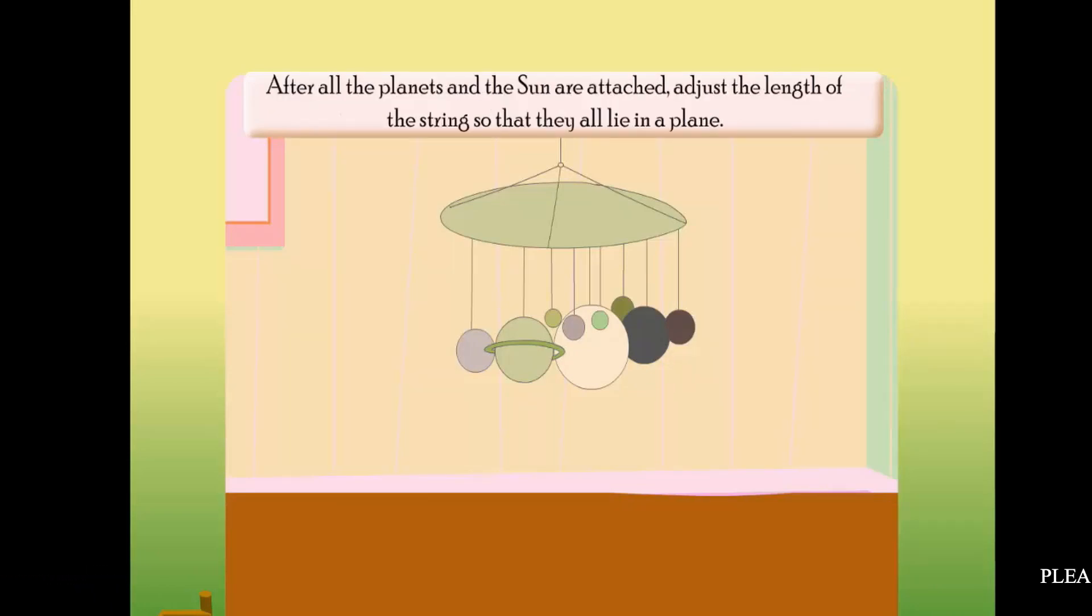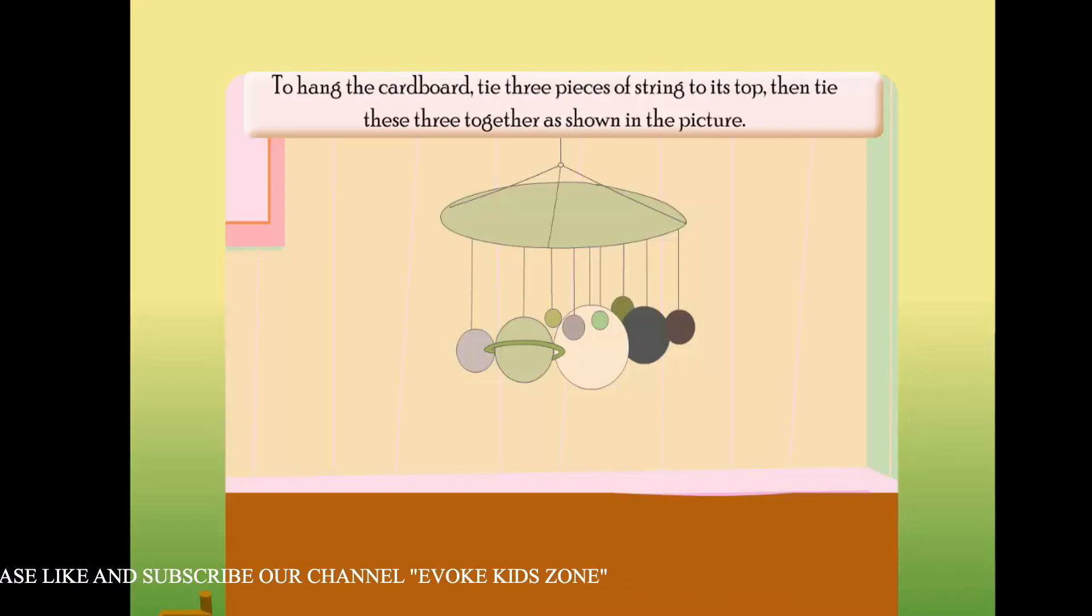After all the planets and the Sun are attached, adjust the length of the string so that they all lie in a plane. To hang the cardboard, tie three pieces of string to its top, then tie these three together.